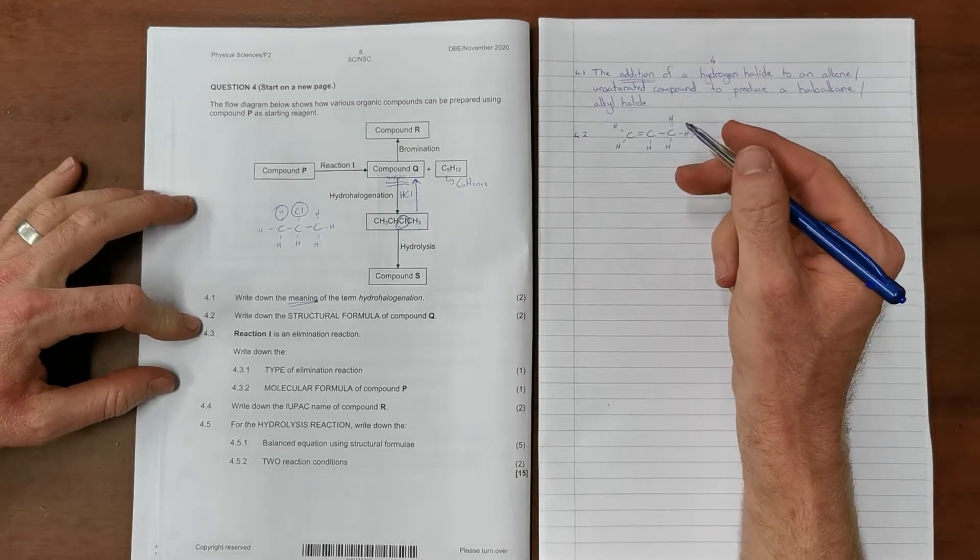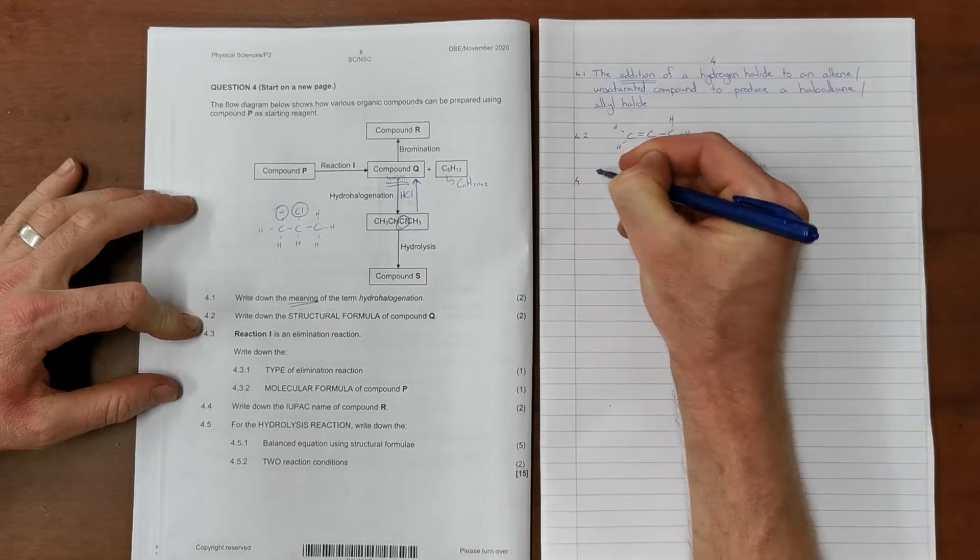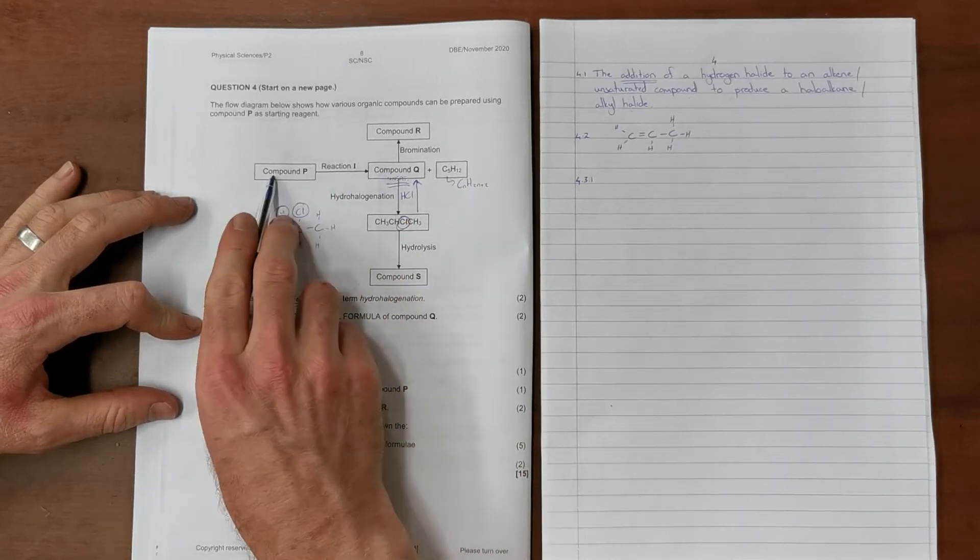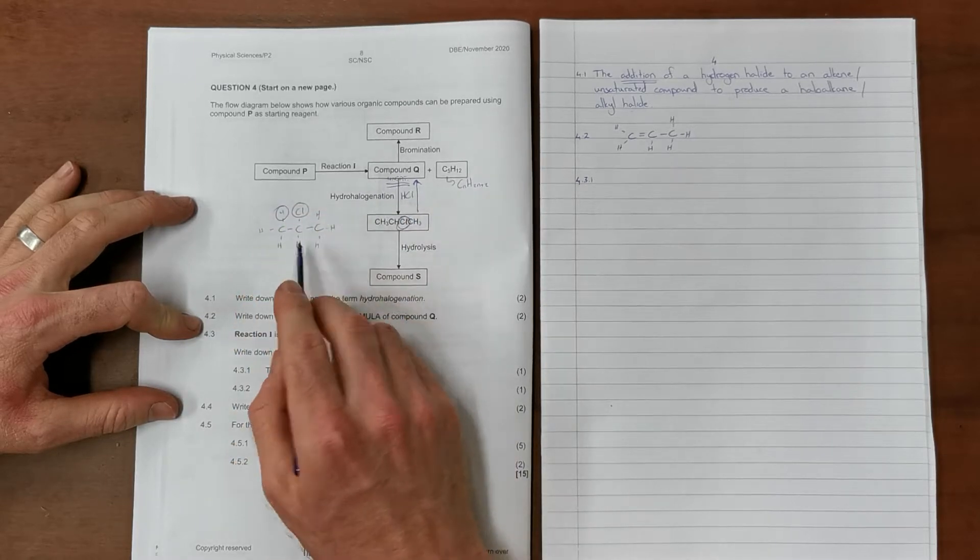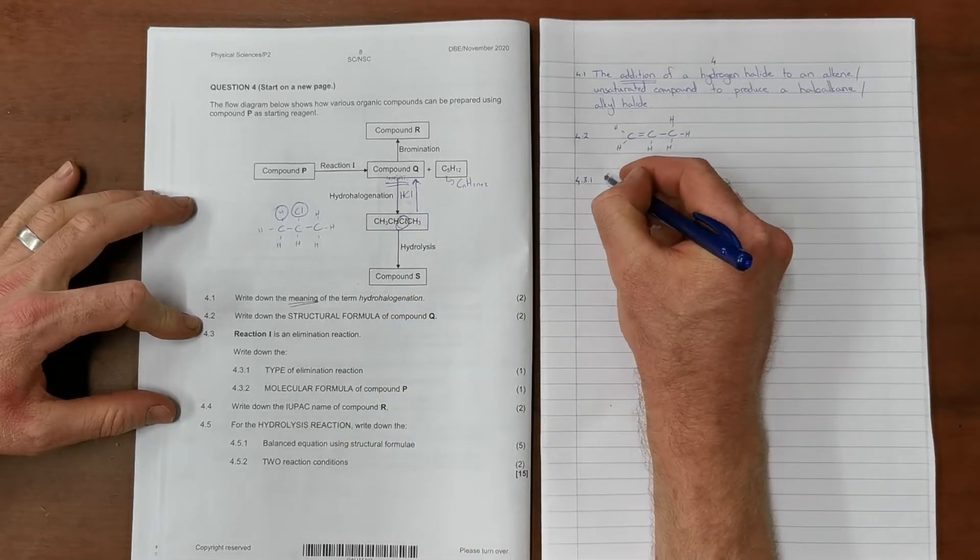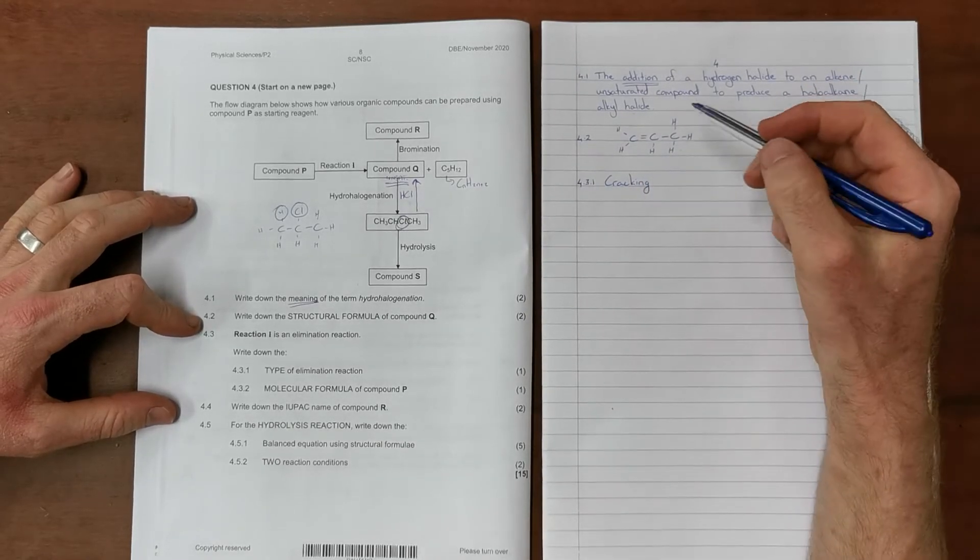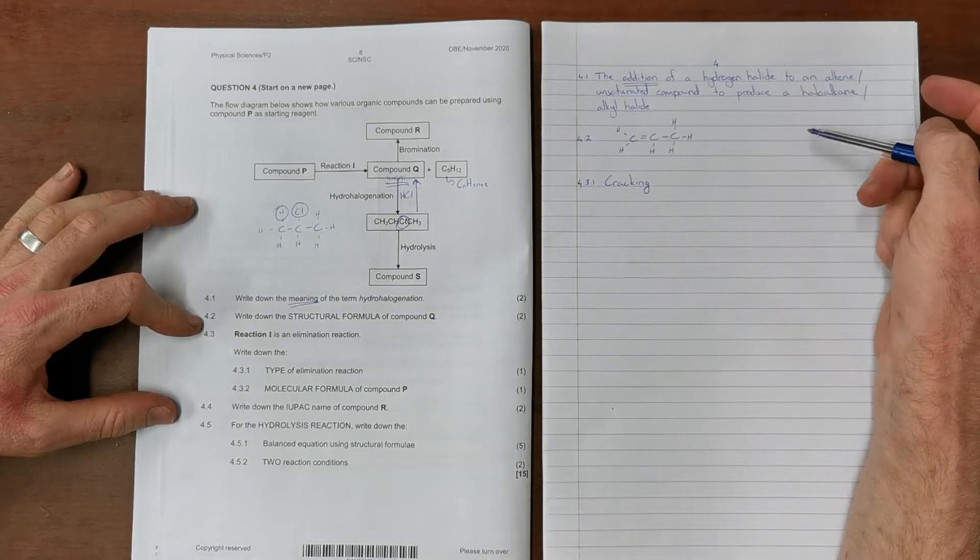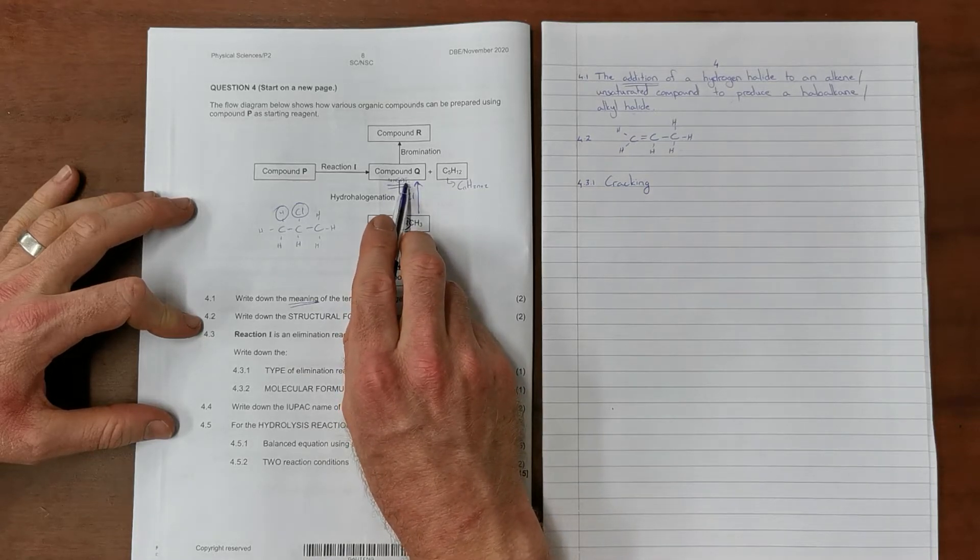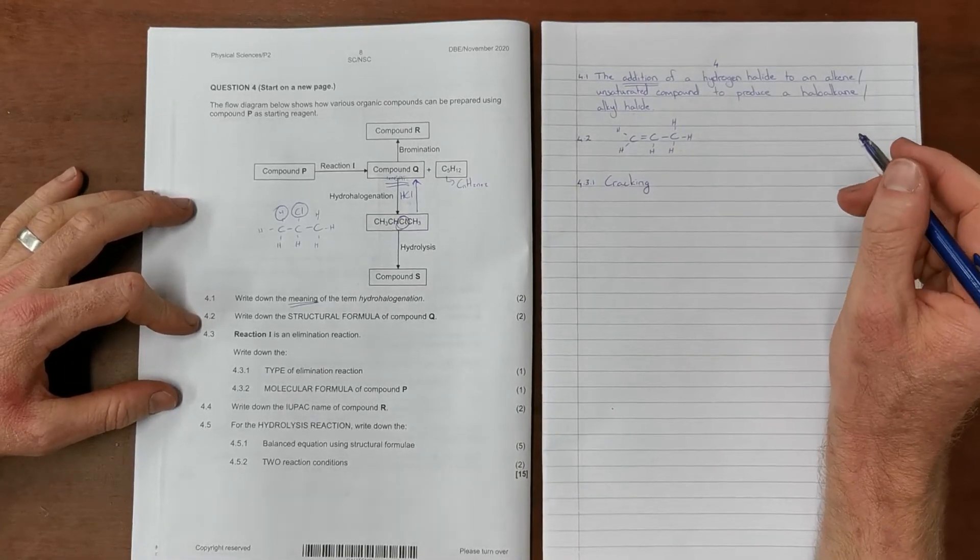Question 4.3 says reaction 1 is an elimination reaction. Write down the type of elimination reaction. The only elimination reaction we know where you start with a single compound, compound P, and end up with an alkene and an alkane is a cracking reaction. We remember there are two forms of cracking: one where we break it up into two or more alkenes and hydrogen, or the second type where we break it up into an unsaturated compound, in this case an alkene and an alkane. Either way we just call those cracking reactions.